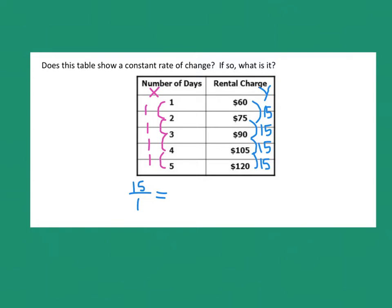And this was about money. So I'm going to go ahead and put my label with it. And the x was number of days. So I would say $15 per day. It is the same. So I could also say that yes, this has a constant rate of change.